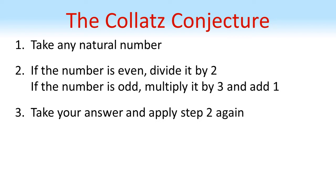We then take the answer to this last sum and reapply step two again. So if it's even, we divide it by two. If it's odd, we multiply it by three and add one. We then continue to repeat this. We keep on going with the same steps.